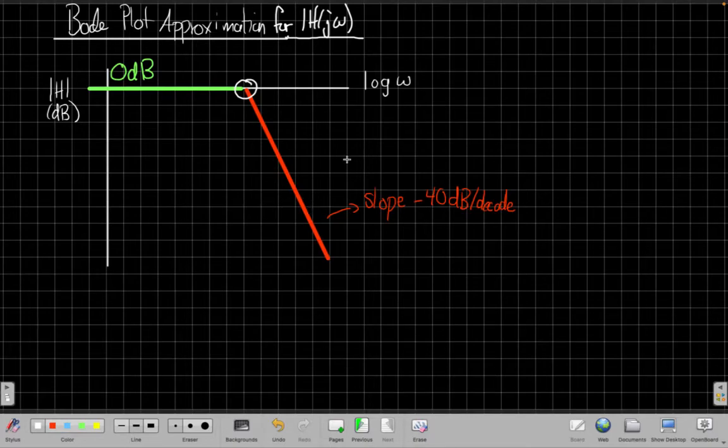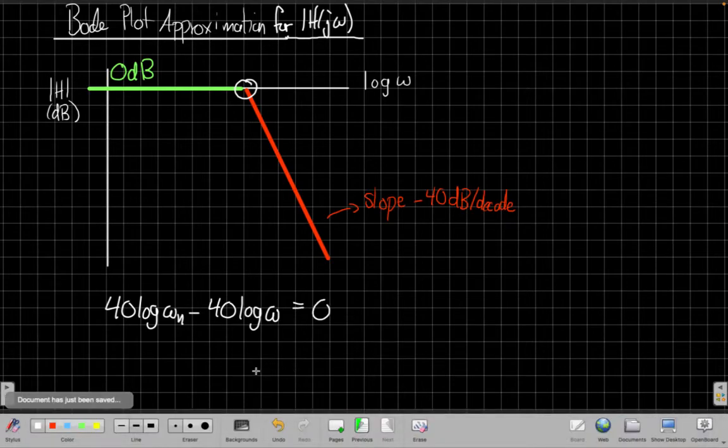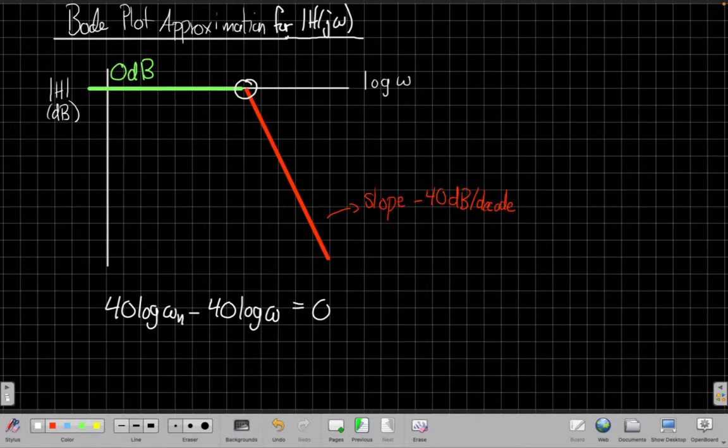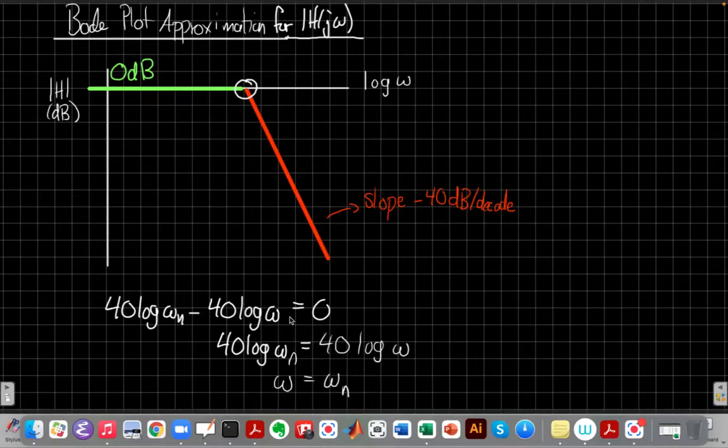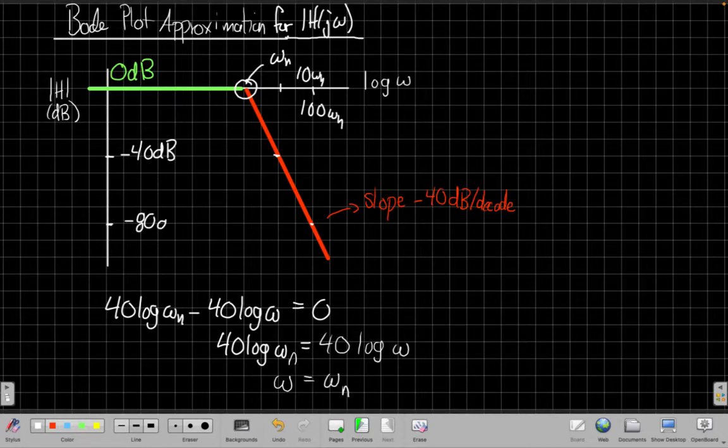Well, that's the point at which the line we had here will intercept 0 dB. The line was 40 times the log of ω_n minus 40 log of ω. And so the intercept happens where that line is equal to 0 dB. So I set that equal to 0, and I'll see that that happens at about ω = ω_n. So this intercept point here will be on the log scale at the point ω_n. And then things will go up, this is 10ω_n here, this will be at 40 dB down in one decade, so on the next decade over would be 80 dB down.